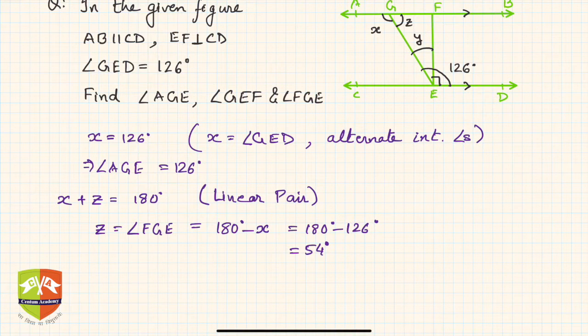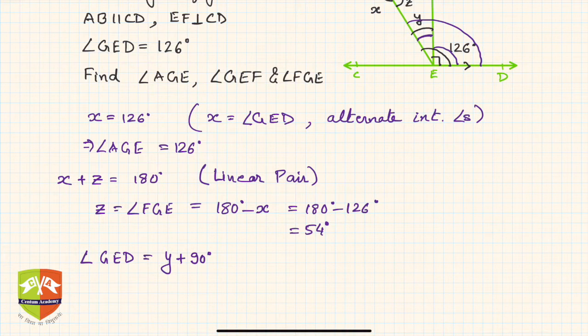Now you have to find out Y. If you see angle GED, what do you see? GED is nothing but Y plus 90 degrees. This is Y and this is 90, so Y plus 90 is the full angle GED. And GED is given to be 126 degrees. So 126 degrees is equal to Y plus 90 degrees.